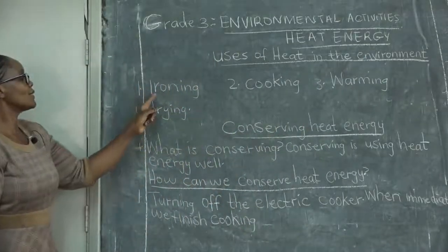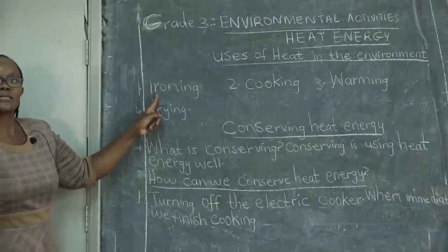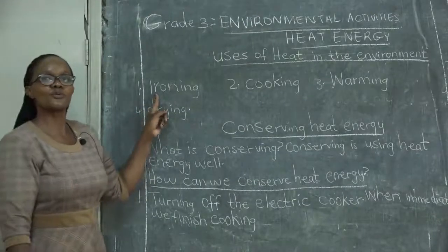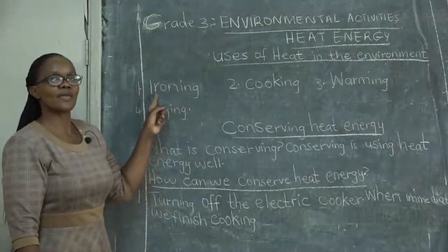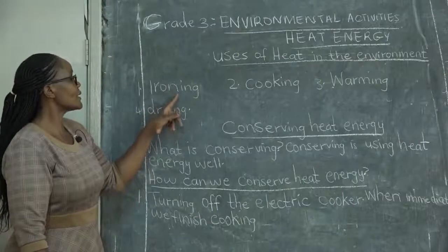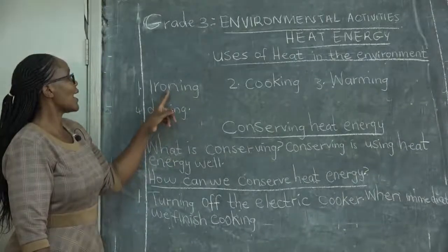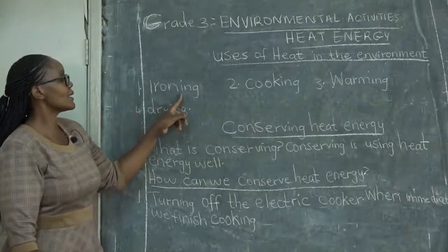One of the uses of heat is ironing. When your clothes get creases, what we do is we iron them so that they can be straight. And for ironing, you have heat in need.